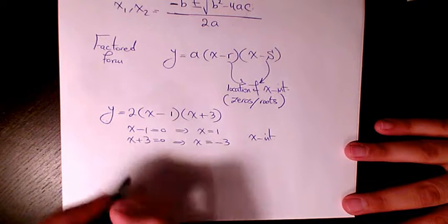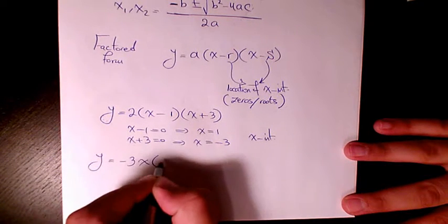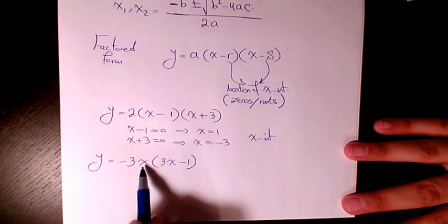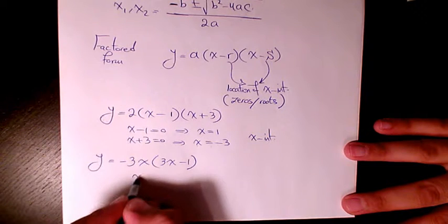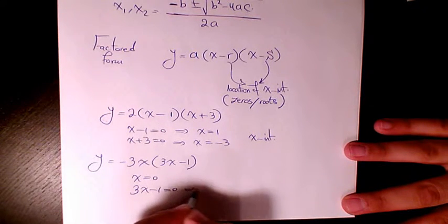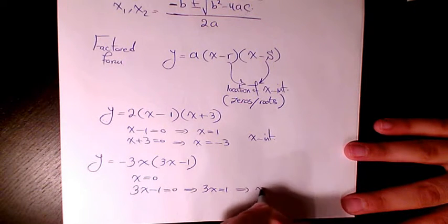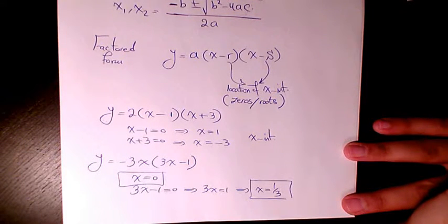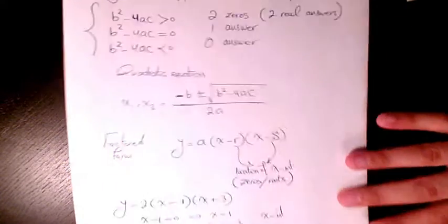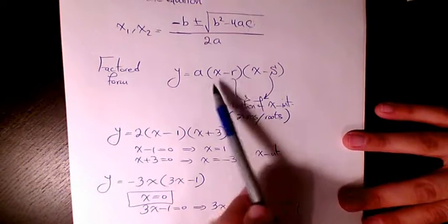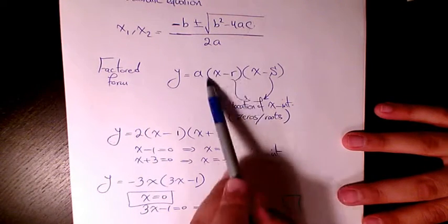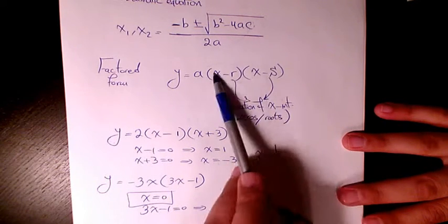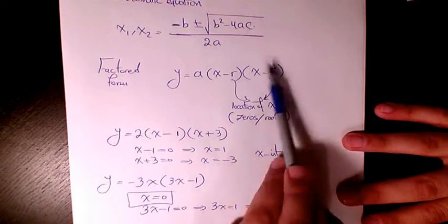Another example: y equals negative 3x times (3x minus 1). Setting each factor to zero: x equals 0, and 3x minus 1 equals 0 gives x equals one-third. Someone might ask — you said quadratic has exponent 2 but we don't see it here. In factored form, each linear factor has degree 1, and 1 plus 1 equals 2, so the overall degree is still 2.